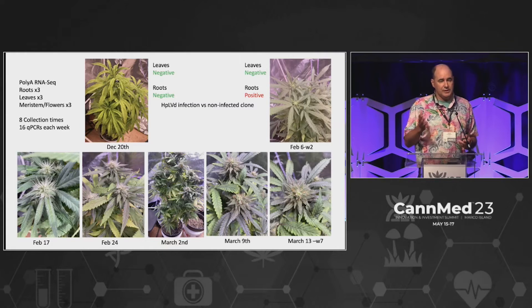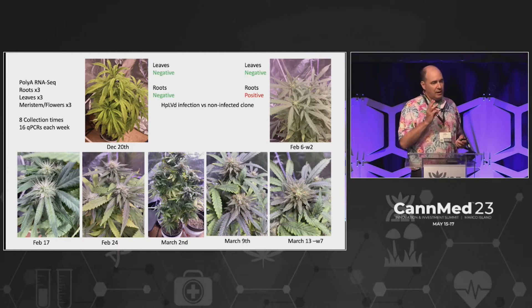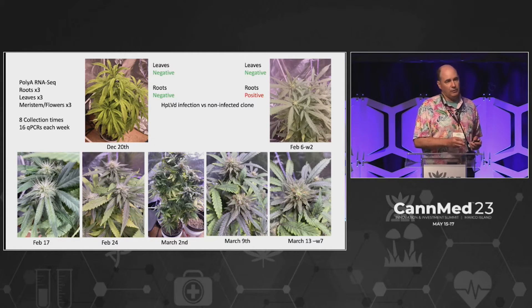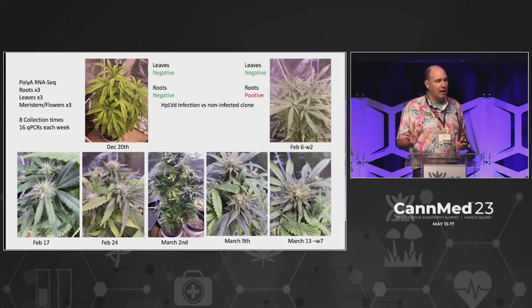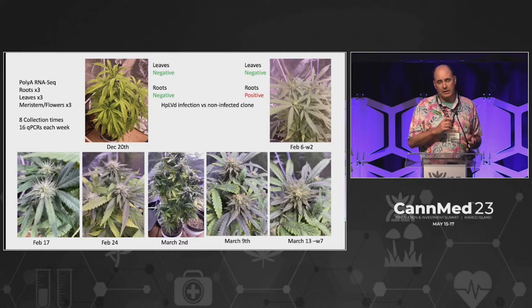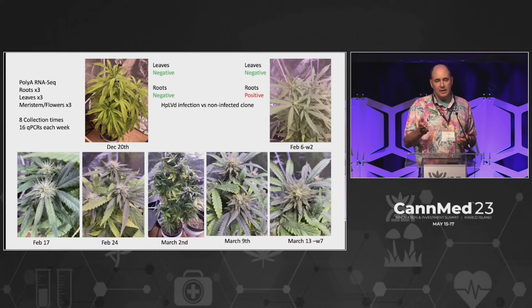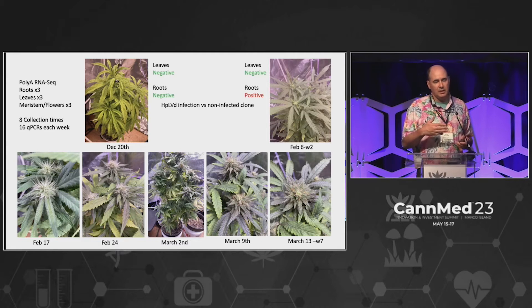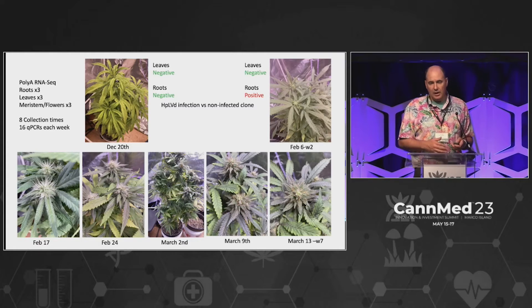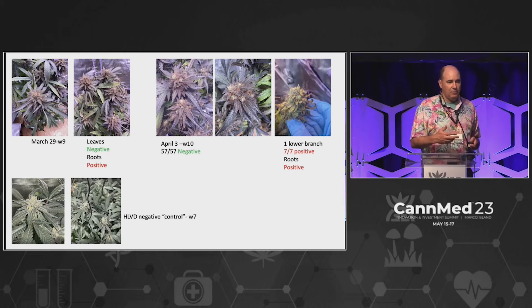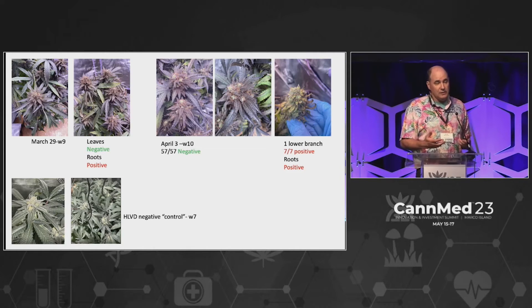Throughout the course of this study, we sampled the roots, leaves, flowers, and marrow stems in triplicate every single week for 10 weeks and sequenced those with over 40 to 50 million reads per sample — about 80 libraries with terabytes of sequencing information. We were tracking this between infected and non-infected. Through the course of time, we had basically 16 qPCRs every week, and this was always negative in the leaves and only positive in the roots. Toward the end of its life cycle, the flowers and the leaves just jacked up the anthocyanin production, though we don't know why.